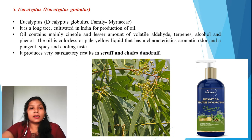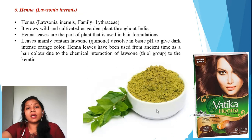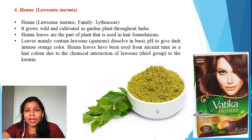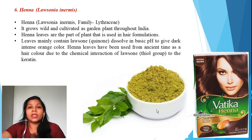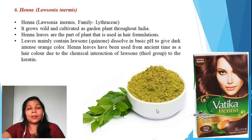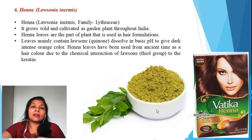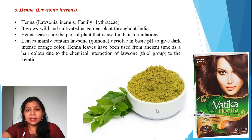The sixth ingredient is henna. The botanical name is Lawsonia inermis, belonging to the family Lythraceae. Henna finds its importance in hair coloring. It is cultivated widely and also grows in gardens. The henna leaves are mainly taken for extraction. It contains lawsone, which is a quinone. Lawsone dissolves at basic pH to give a dark, intense orange coloration. When henna is applied to hair, it interacts with keratin and gives coloration. Henna has been used since very ancient times for hair dyes and coloring.